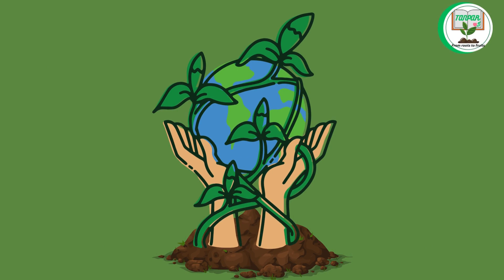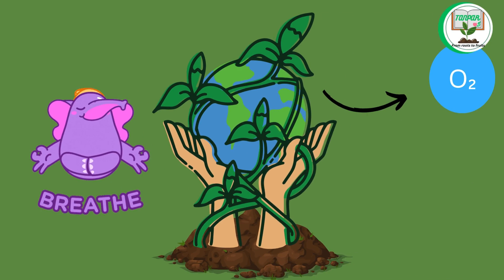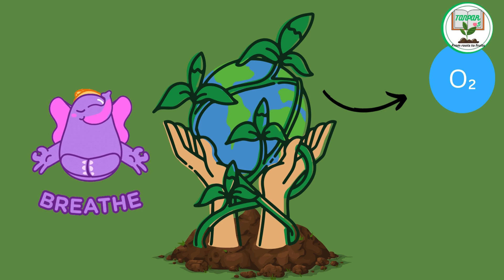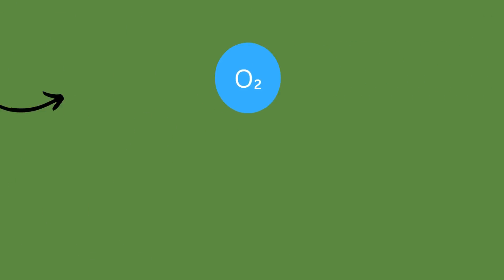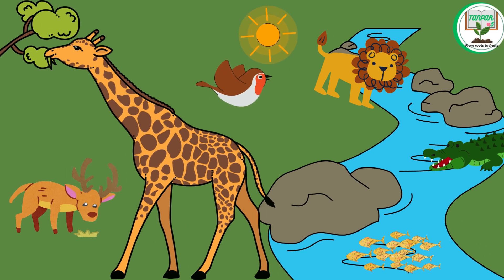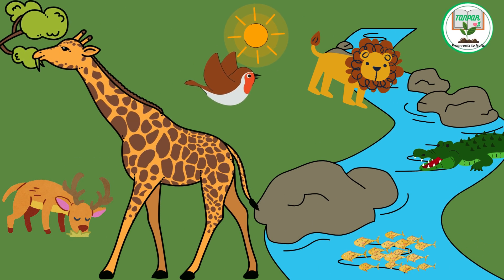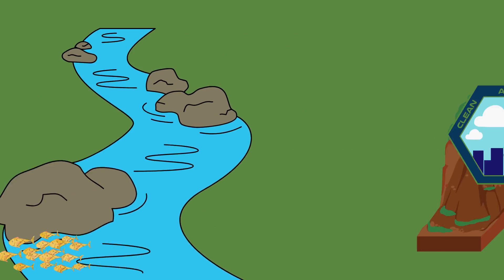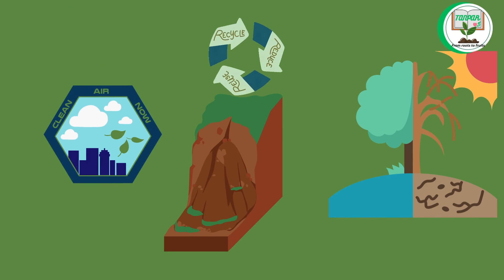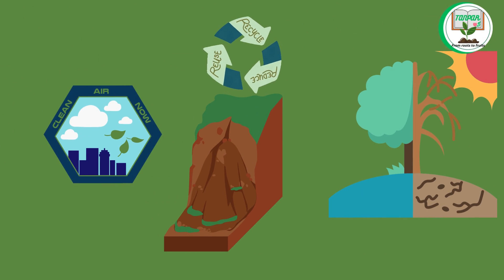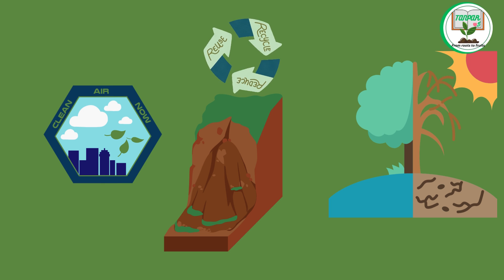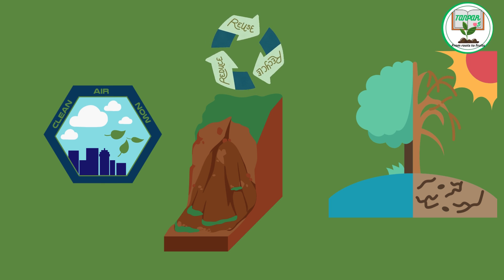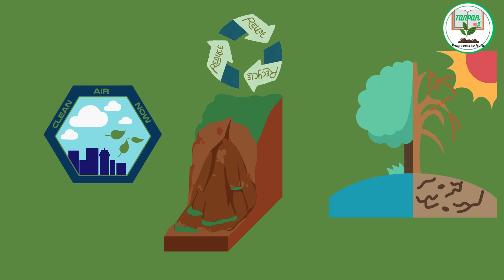Importance of plants: plants are essential for life on earth. They provide oxygen for us to breathe, food for us to eat, and habitats for animals. They also help to clean the air, prevent soil erosion, and regulate the climate.